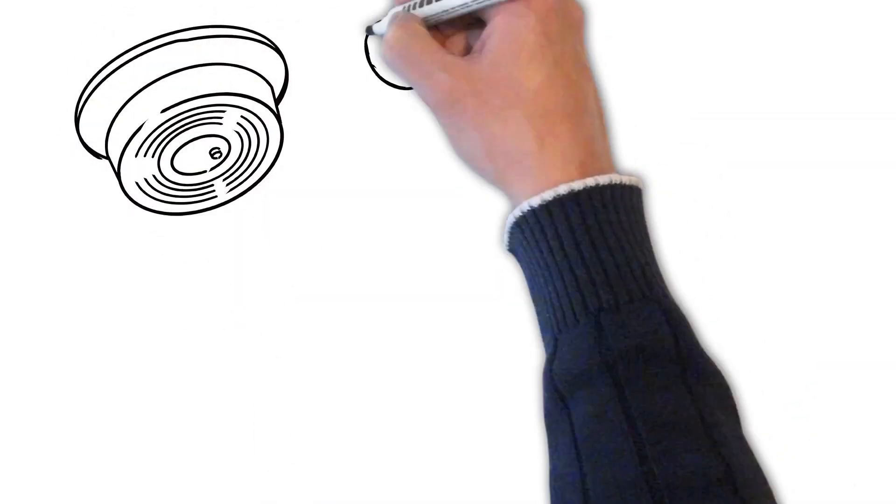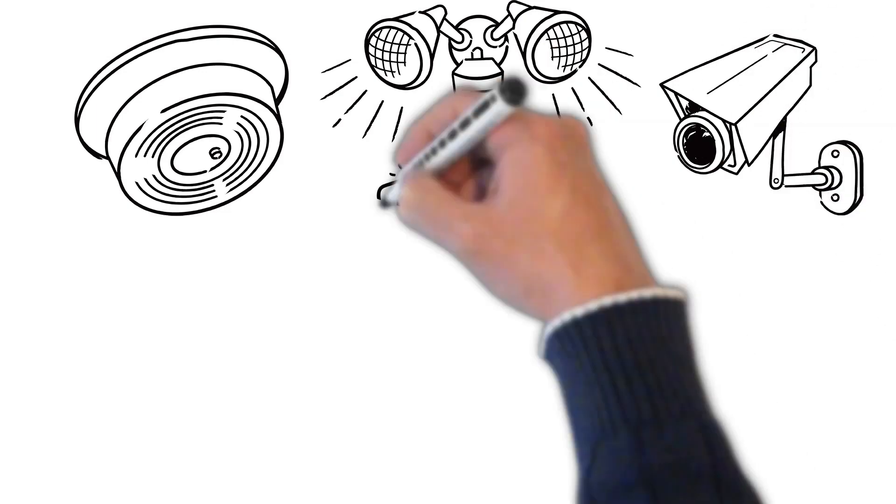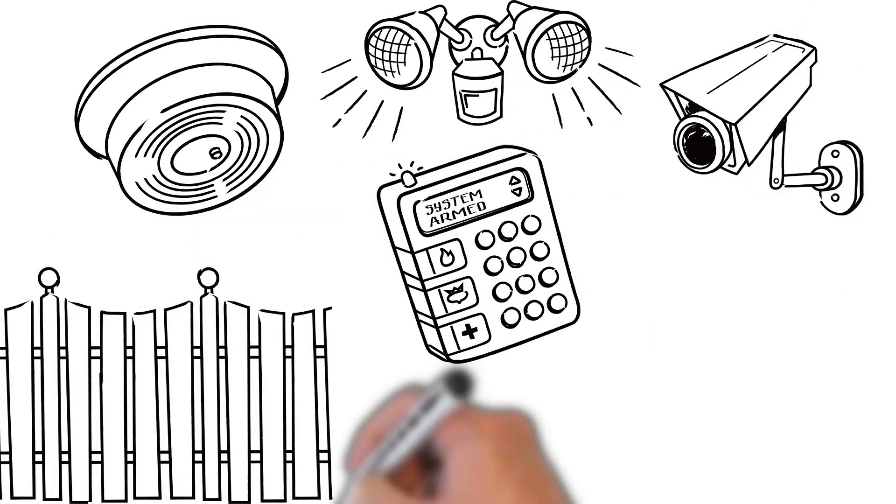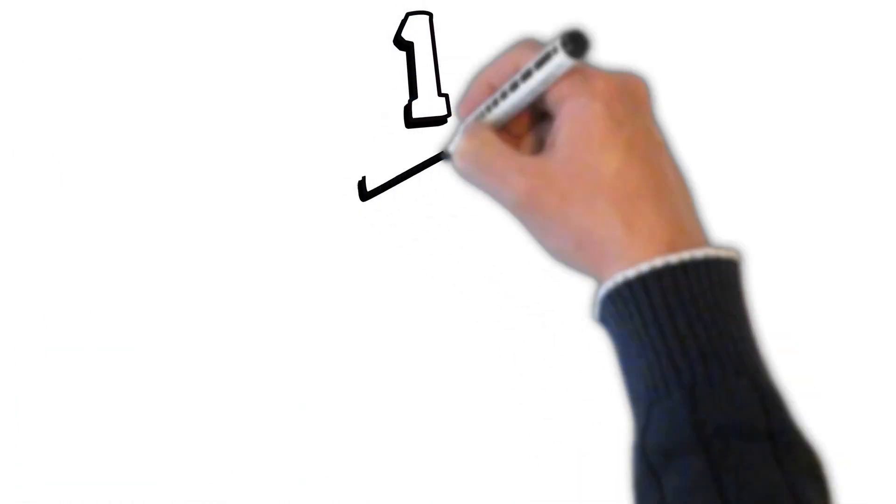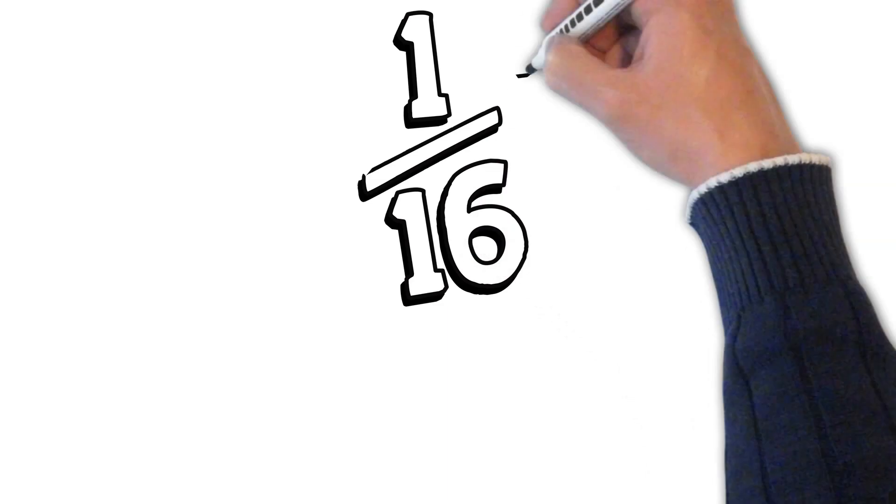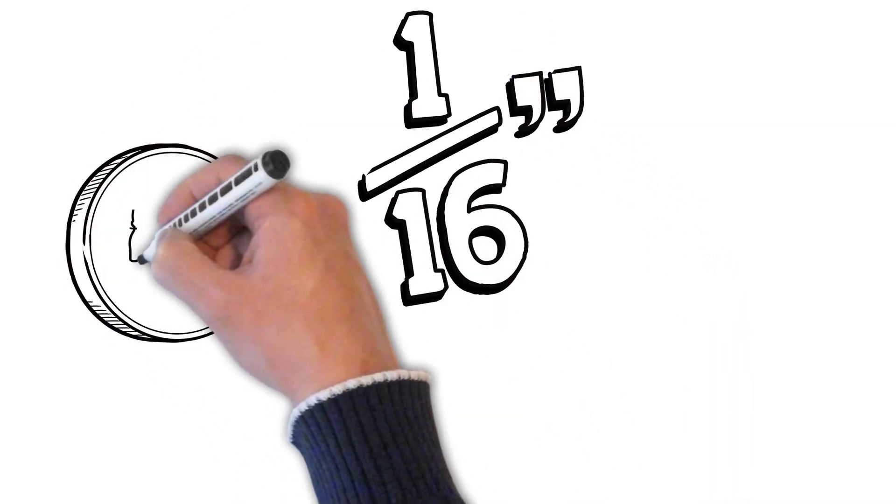Smoke detectors, motion lights, security cameras, alarms, fences - we don't think twice about investing in things like these. They protect our home against invasion, right? But what about one-sixteenth of an inch? Doesn't sound too threatening, does it?